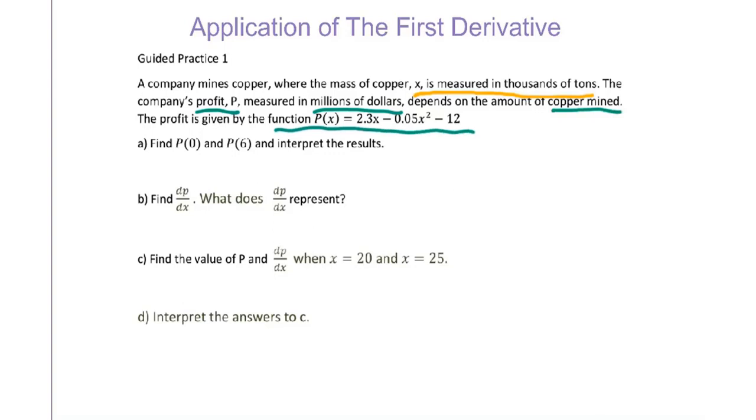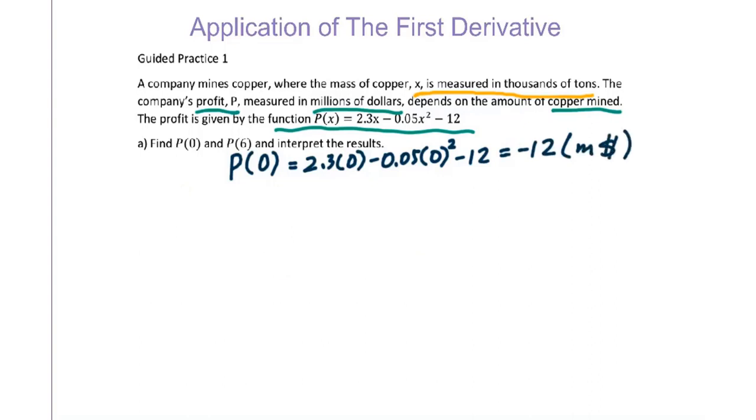Part a: Find P(0) and P(6) and interpret the results. We have P(0) equals, we plug in 0: 2.3(0) - 0.05(0)² - 12 equals negative 12. The unit is million dollars. Then P(6) equals 2.3(6) - 0.05(6)² - 12. We put it into calculator, you will get 0.